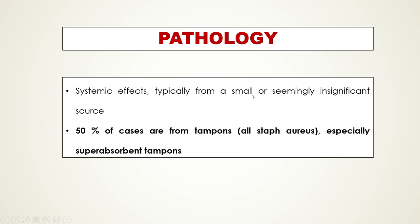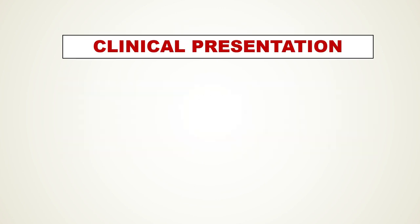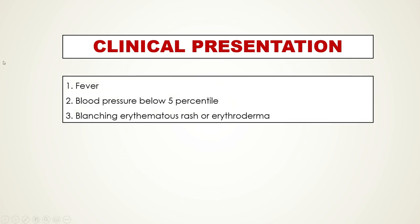Patients generally have systemic effects typically from a small or insignificant-seeming source. About half of cases are from tampons — women who leave a tampon in for too long or use a hyper-absorbent tampon can have staph colonize the tampon and grow. The toxin is then released from where the staph are growing and gets into the systemic circulation, causing its effects.